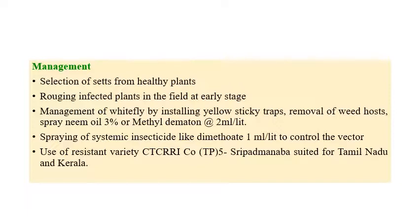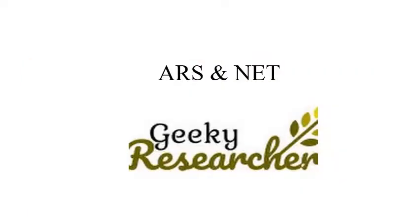There are also resistant varieties developed by CTCRI — Co-TP5 and Sri Padma — which are suited for Tamil Nadu and Kerala areas. These are the resistant varieties available for managing Indian Cassava Mosaic Virus.